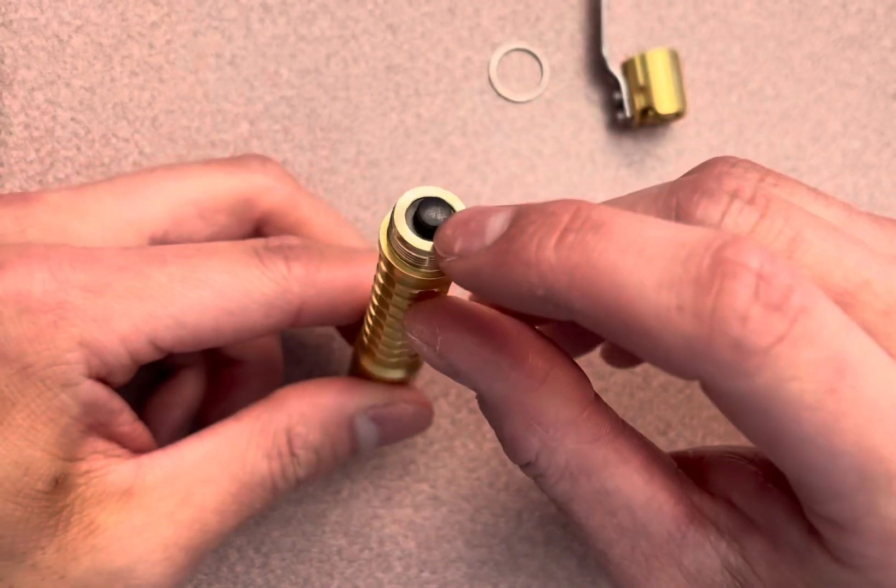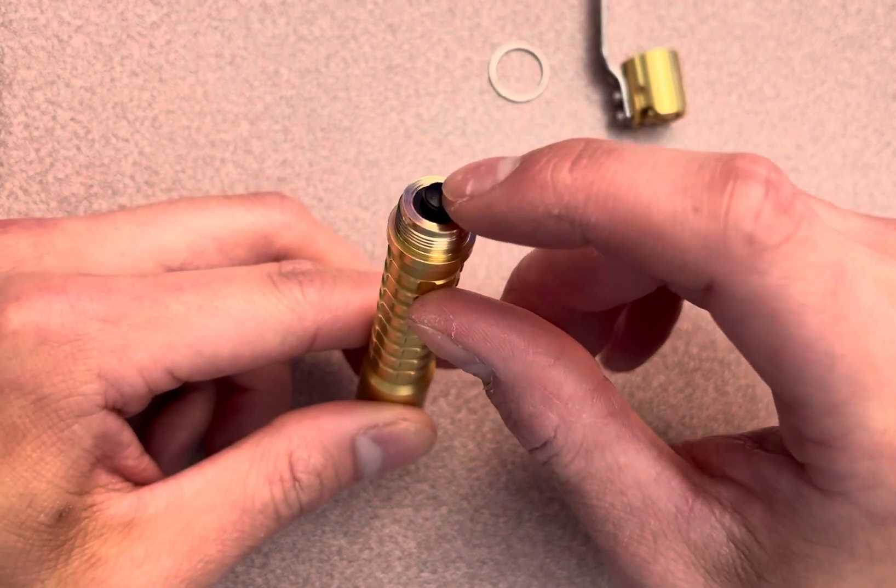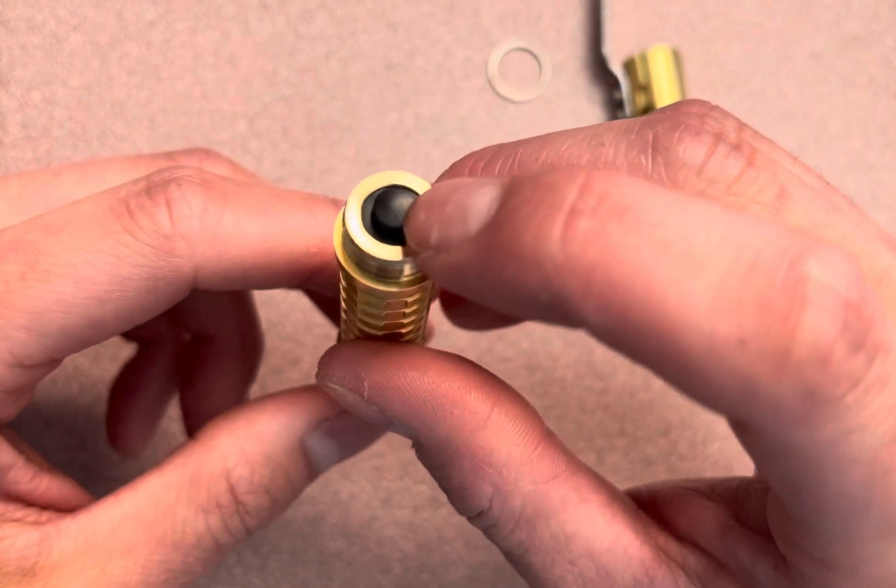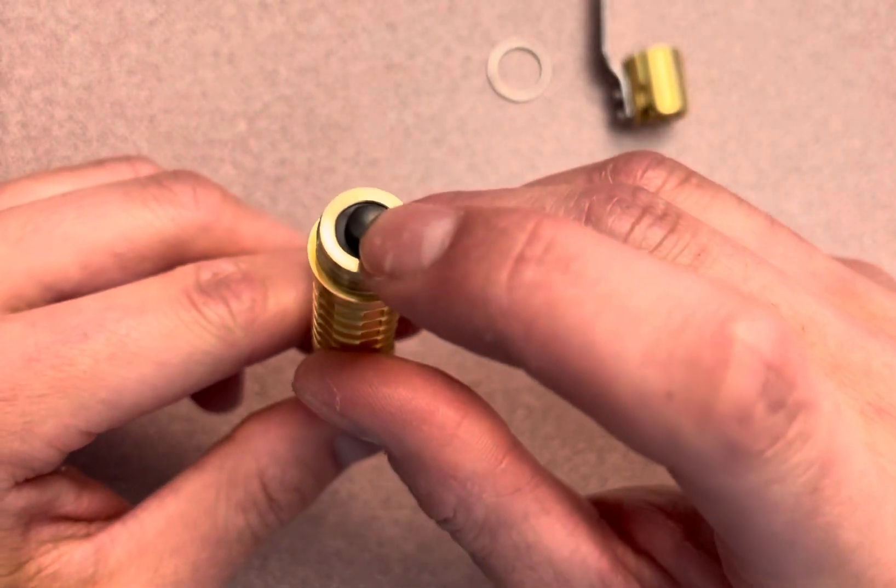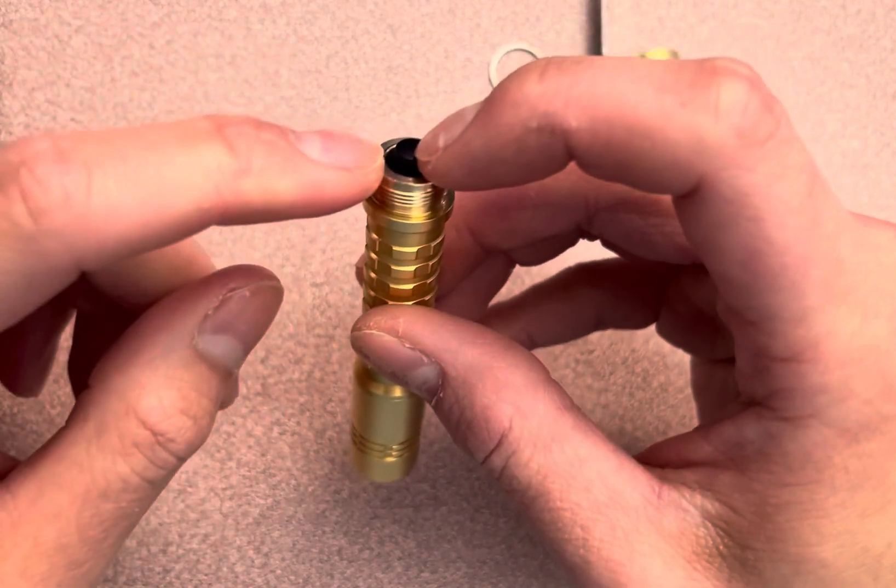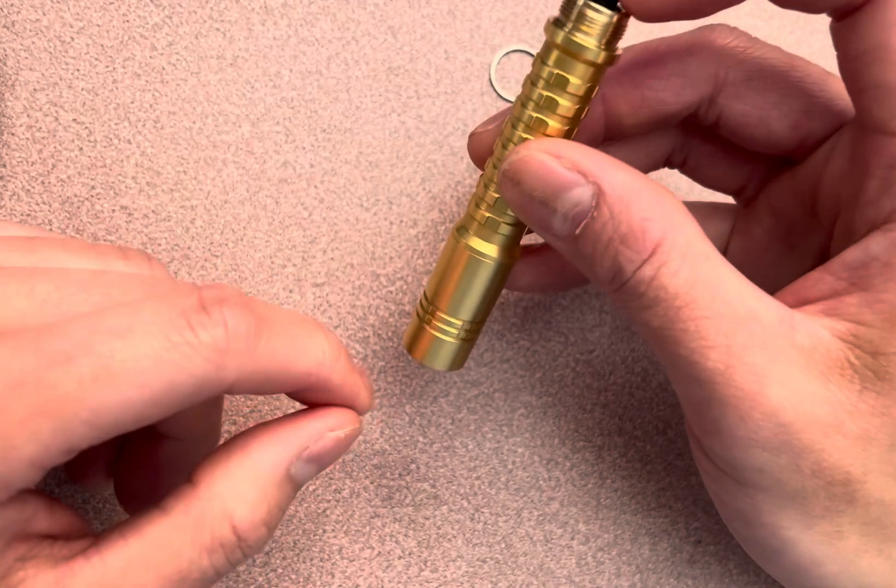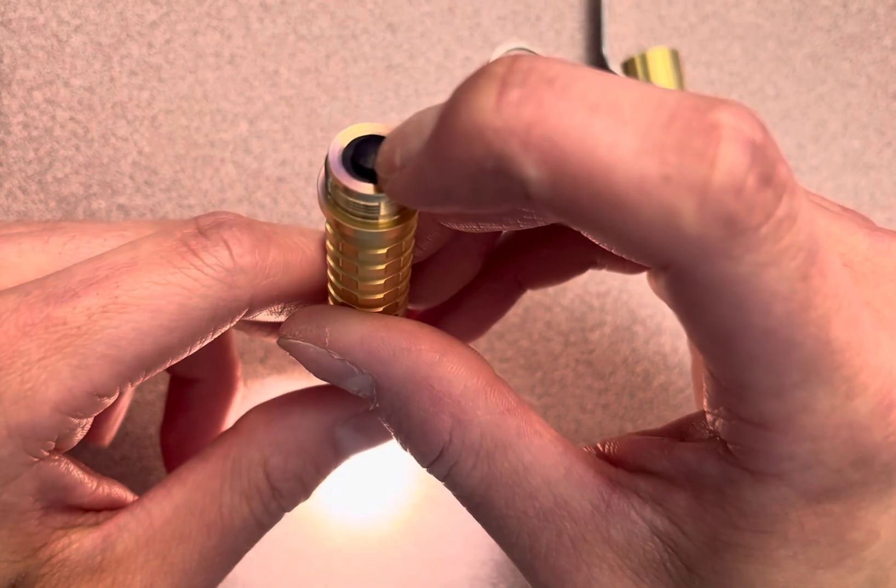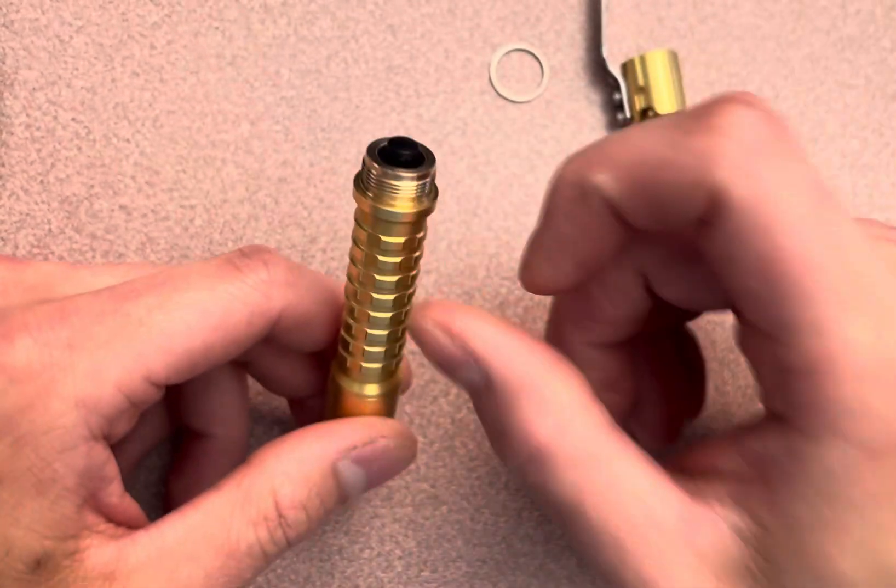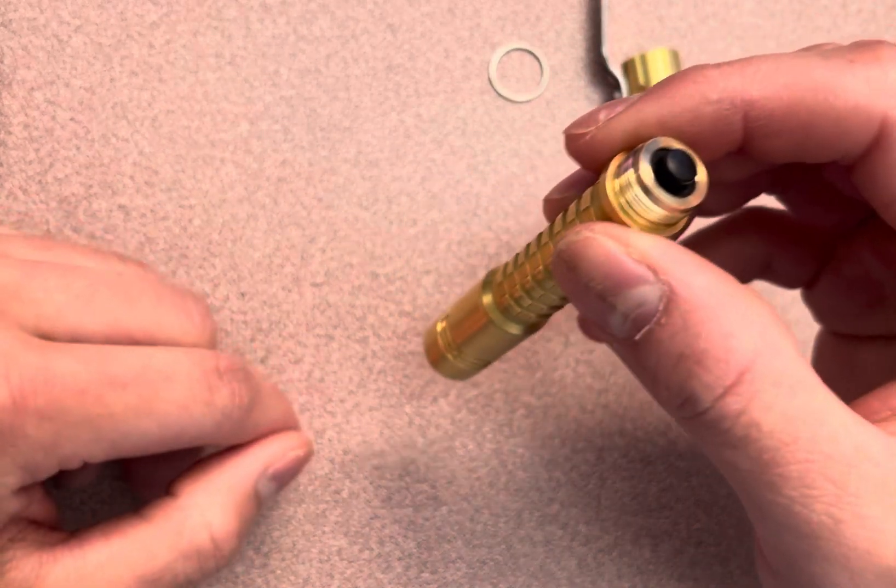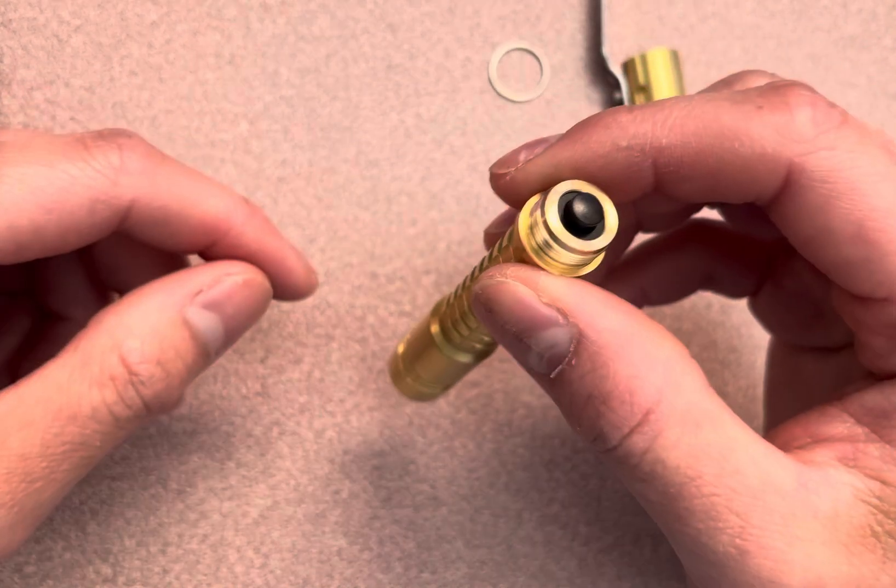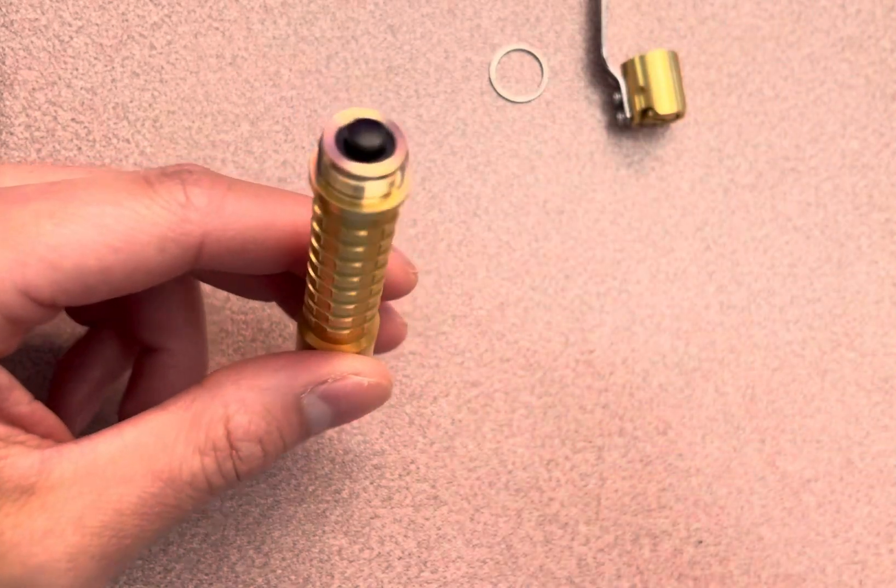To enter programming mode you're going to do eight half clicks and then a full click. A full click is the regular click you press down and then you hear the click. When you do a half click you won't hear that click but the light will turn on. So you want to press it down halfway, the light will turn on but there's no click. You're going to do that eight times and then do a full click, and that will enter programming mode. You will see that because it will flash and then it will strobe. So we're going to do that now.